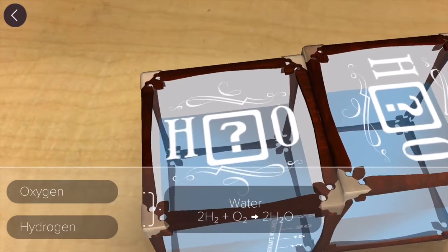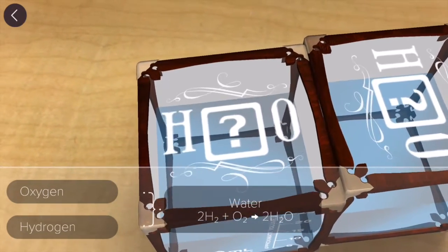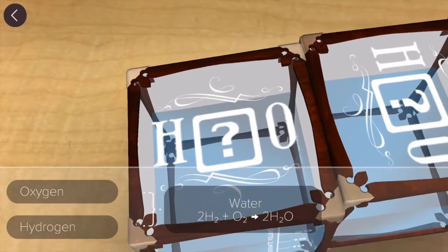Two sets of two hydrogen atoms combined with two oxygen atoms. It gives me two molecules of H2O.